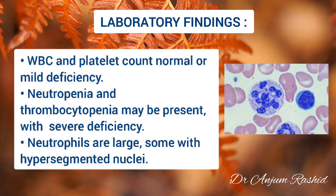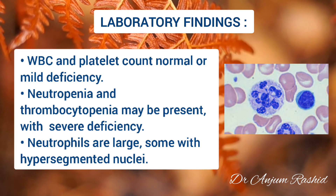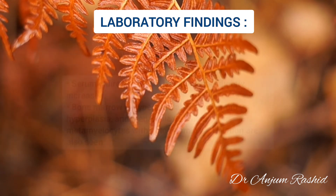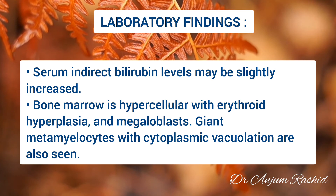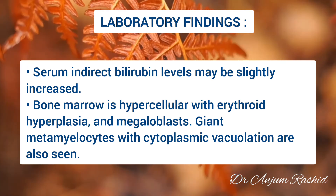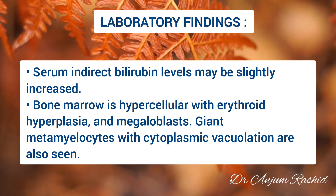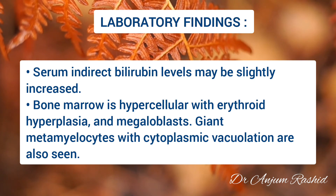WBC count and platelet count are usually normal in mild deficiency, but neutropenia and thrombocytopenia may be present with long-standing and severe deficiency. Neutrophils are usually large and have hypersegmented nuclei. Serum indirect bilirubin levels may be slightly increased. Bone marrow is hypercellular due to erythroid hyperplasia, and megaloblastic changes are present.